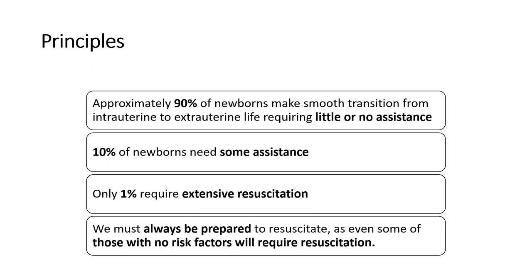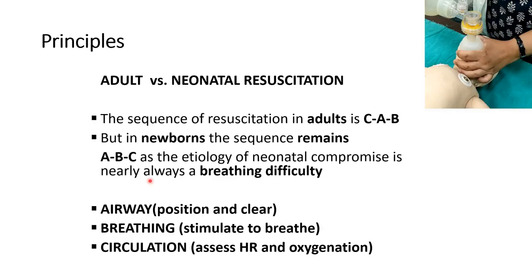We should always prepare to resuscitate because even a full-term baby without any risk factor may require resuscitation. What is the basic difference between adult and neonatal resuscitation? In adults, the main cause of compromise is circulation, so the sequence of resuscitation is CAB. While in newborns, they are compromised because of breathing, so the sequence remains ABC — first airway, then breathing, then circulation.